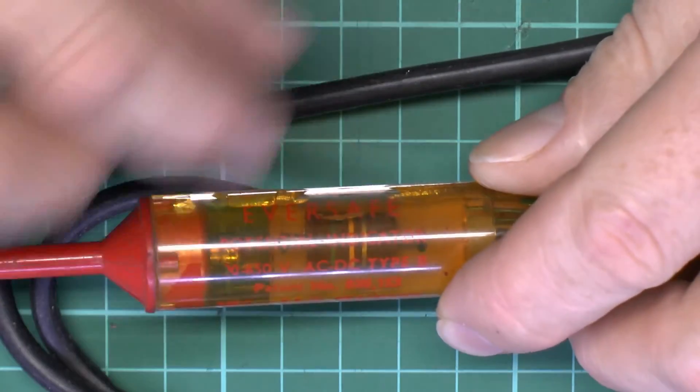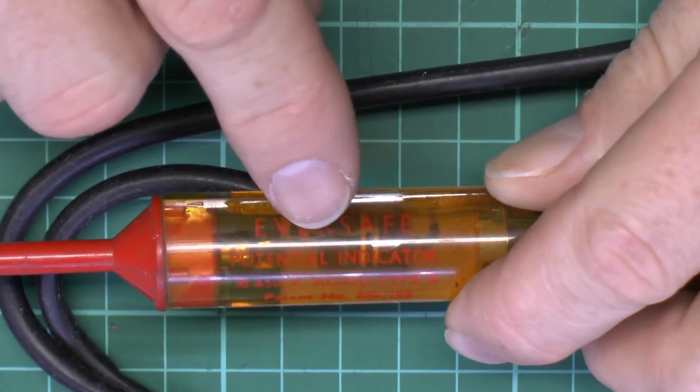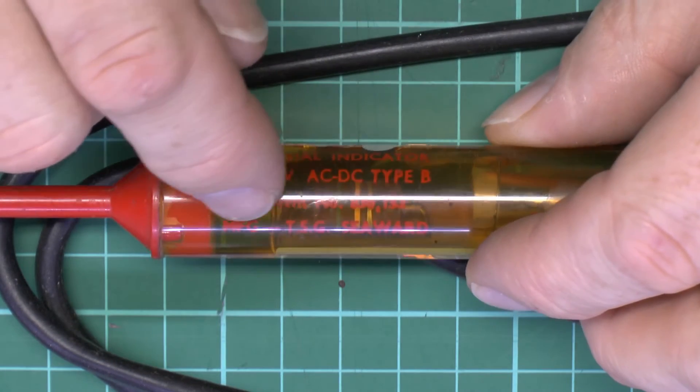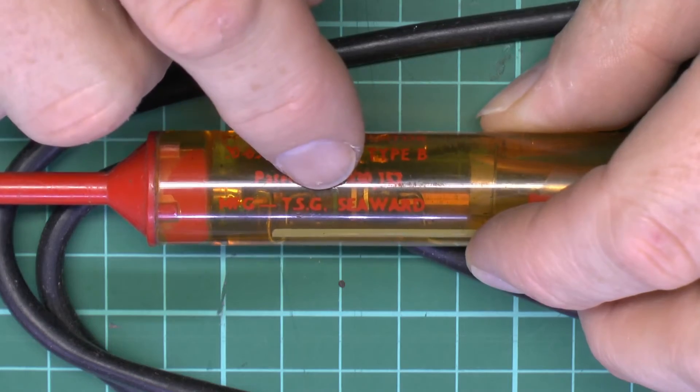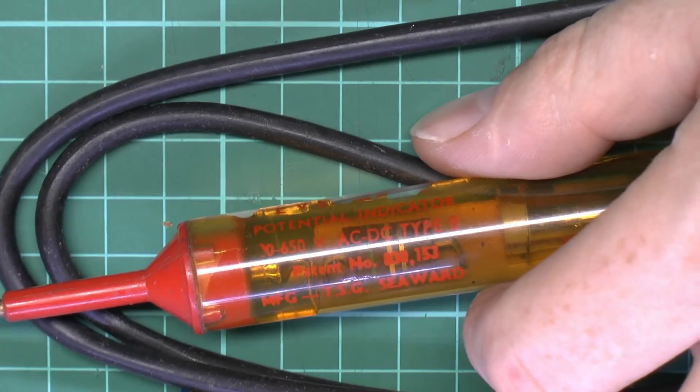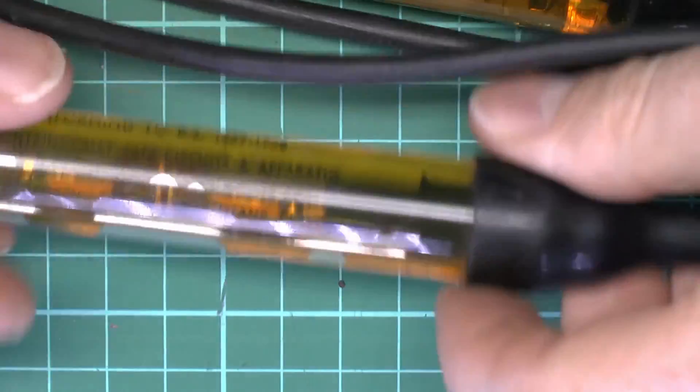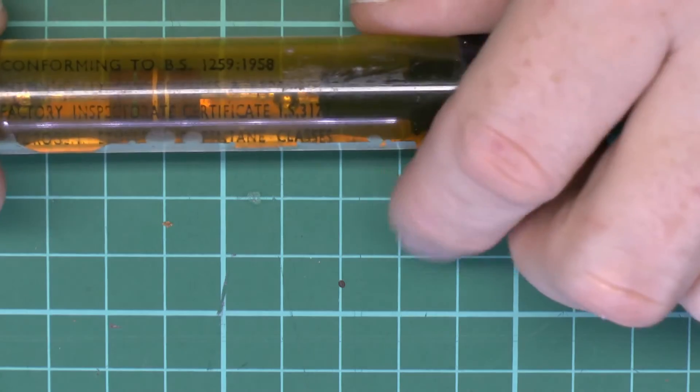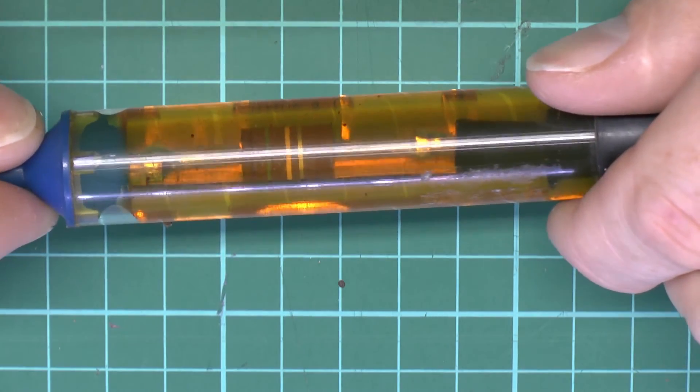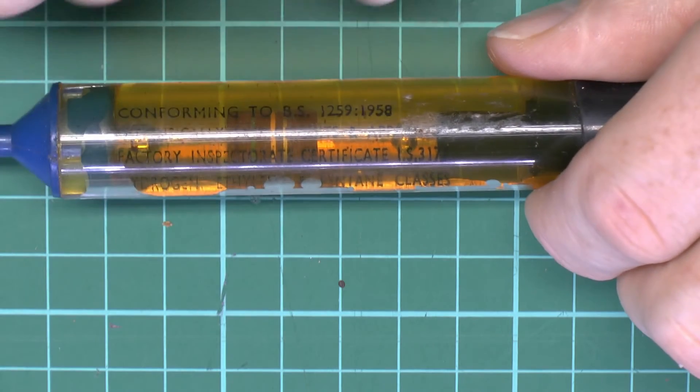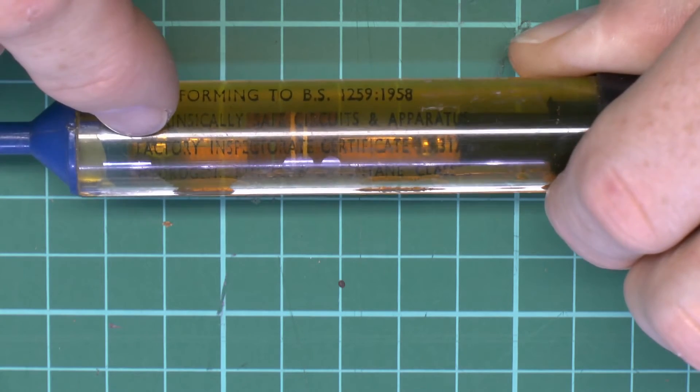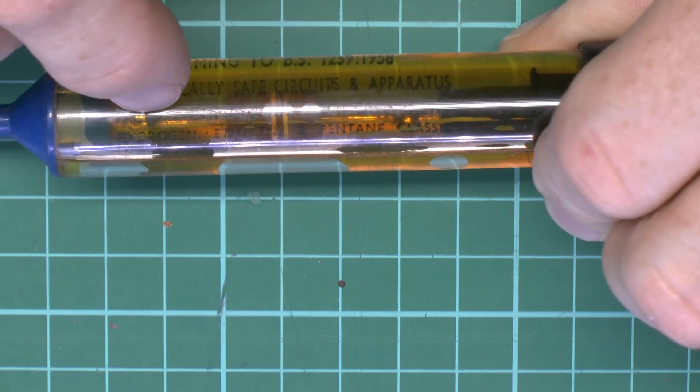A closer look there at the text. As you can see it's essentially just got the Eversafe brand name there. Potential indicator 650V AC or DC type B, and just the pattern number and manufacturer's name which is TSG Seawood. Seawood still exists as a manufacturer but not the same one that made this particular item. This item is circa 40 years old. The text on the other side conforms to the various standards there, and it's really just repeating what was on the instruction leaflet about the factory inspectorate and where it should be used.